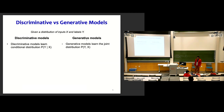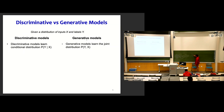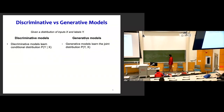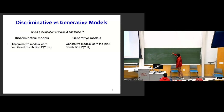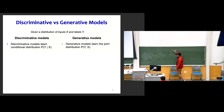Moving on to the characterization of discriminative and generative models: discriminative models model the conditional distribution. Given some data — where X's and circles are different sets — discriminative models ask what is the probability that a given data point belongs to some class. They aim to find a decision boundary which separates the two sets of data.